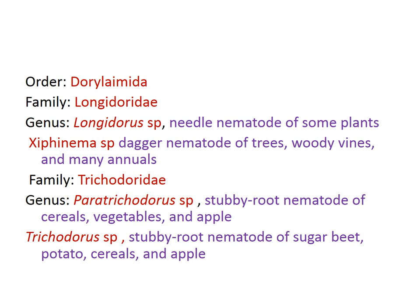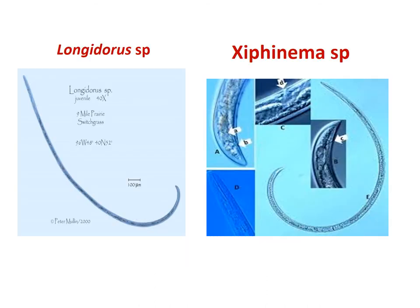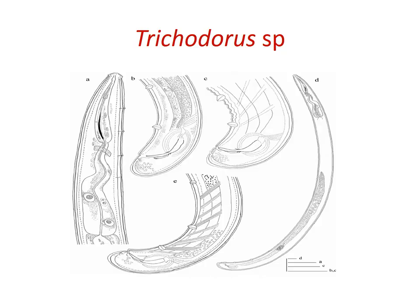Family Trichodoridae — the genus Paratrichodorus and Trichodorus are called stubby root nematodes because they infect roots, causing them to show a stubby nature. Paratrichodorus infects cereals, vegetables, and apples. Trichodorus also is a stubby root nematode which infects sugar beet, wheat, potatoes, cereals, and apples. We can see the diagram of Longidorus — the longest plant parasitic nematode — and Xiphinema, also a longer nematode. Trichodorus shows a different type of stylet compared to other nematodes.